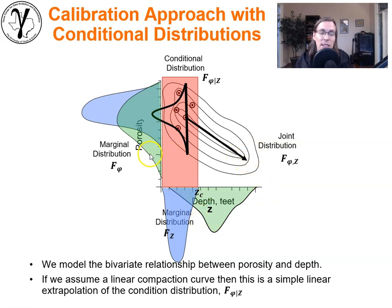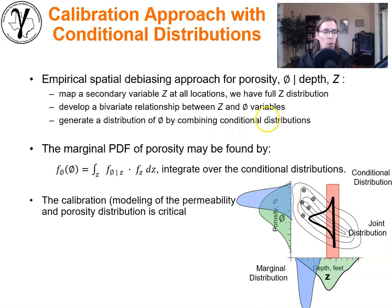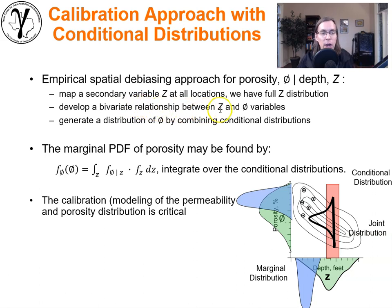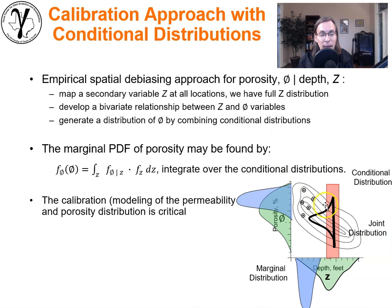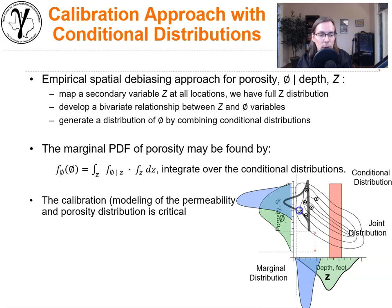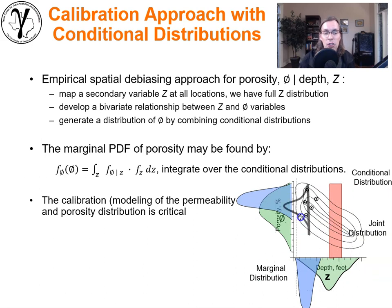We'll take this conditional distribution and extrapolate it in a linear manner to cover the full range of depths, then use that to calculate the full porosity distribution. To do this we need to map the secondary feature — depth — at all locations to get the full depth distribution, and develop a bivariate relationship between depth and porosity. We can generate the distribution of porosity over all locations by combining all of the conditional distributions that have been extrapolated across very shallow depths, deeper depths, and very deep ranges.